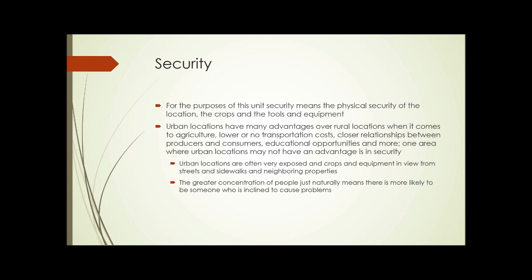Urban locations have many advantages over rural locations when it comes to agriculture: low or no transportation costs, closer relationships between producers and consumers, educational opportunities, and more — all of those things that we've been talking about. However, one area where urban locations may not have an advantage is insecurity. Urban locations are often very exposed, and crops and equipment are in view from the streets, sidewalks, and neighboring properties. The greater concentration of people just naturally means that in that group, there's probably someone more likely inclined to cause problems.